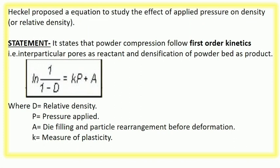So what is the equation? Natural log of 1 over 1 minus D equals k P plus A. Here D is relative density, P is the pressure applied, A is die filling and particle rearrangement before deformation. Let us suppose you have just filled the die and you have not applied the pressure. The arrangement of the particles before applying pressure is the value of A, and k is the measure of plasticity. More the value of k, harder is the tablet.